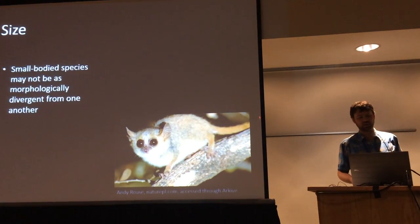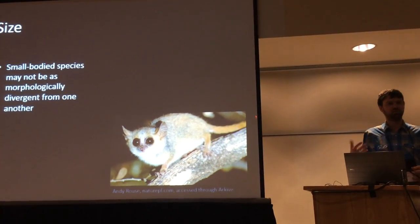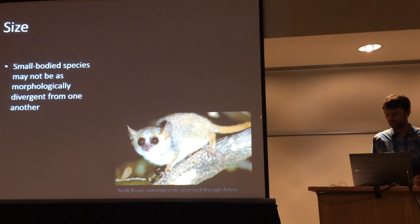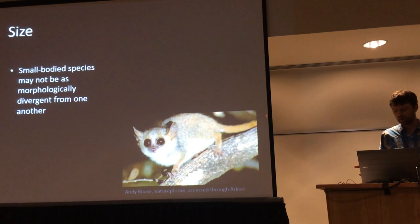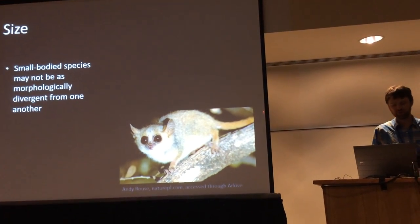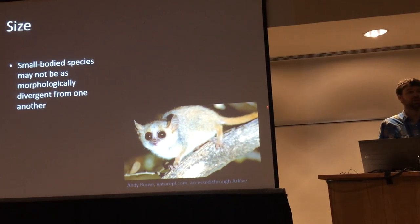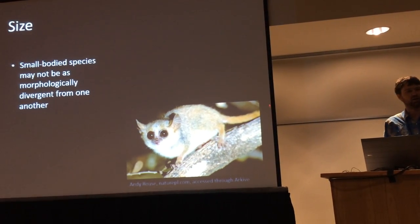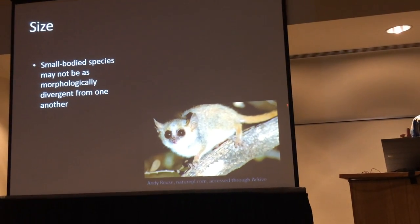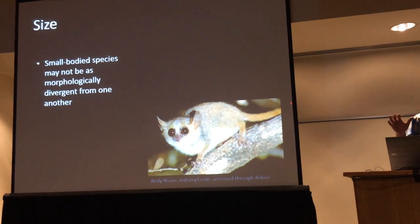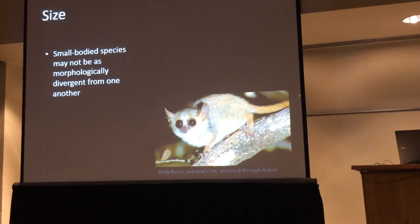Size is also kind of an issue in mammals. There's this idea that small-bodied species may not be morphologically divergent from one another. Take this mouse lemur — a 30-gram primate, the smallest primate. Look at it on the branch. The branch appears to be a pretty flat surface to an animal this size, compared to some other lemurs or primates like a howler monkey or orangutan. They have a really different way of interacting with a tiny little branch — they typically need much longer fingers and a more powerful grasp to support that kind of body weight.